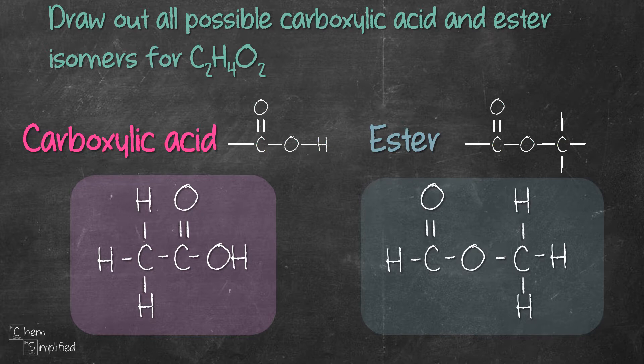Since there's no other way to draw esters with two carbons, that means we're done drawing out all carboxylic acid and ester isomers for C2H4O2.